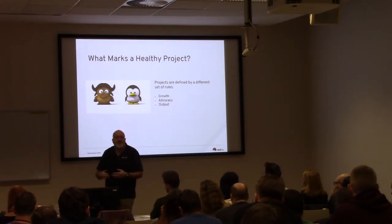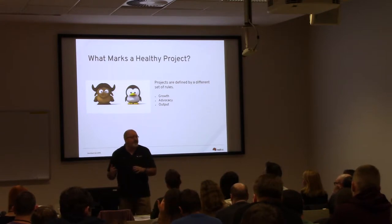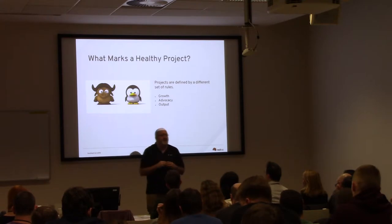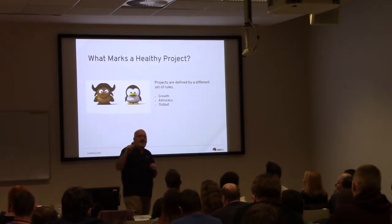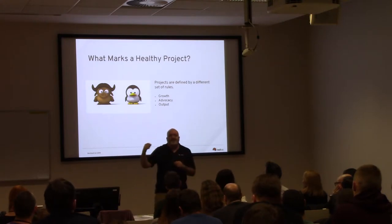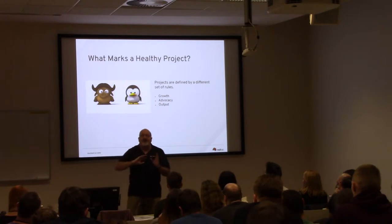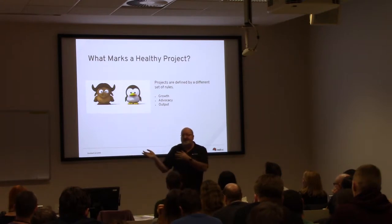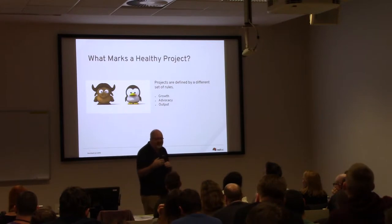Another area is diversity and inclusion, which is very critical to any community, and there are metrics you can ascertain about that. Risk is another factor — and I want to be careful here because risk has a negative connotation. Some people in the free and open source software communities define risk as something to do with a license, like a copyleft license such as the GPL or LGPL being riskier than something like the Apache license. That's not the kind of risk I'm talking about.